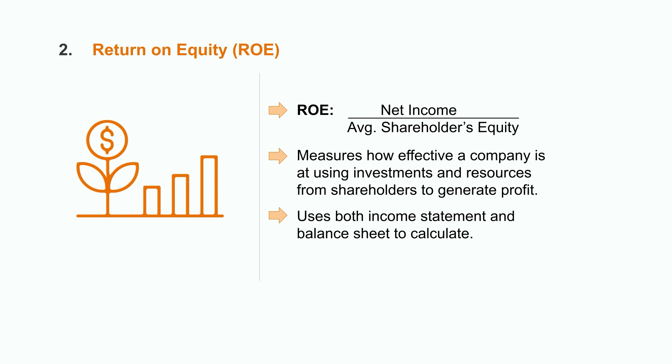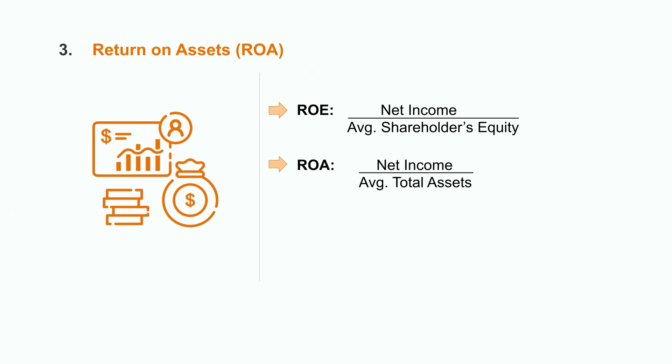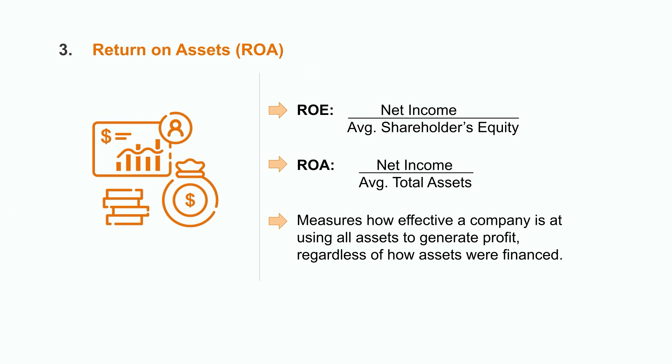This is critical for an investor to understand. Let's look at one more ratio called return on assets. This ratio is similar to return on equity. However, instead of measuring the profit generated based solely on investment, the return on assets ratio measures the company's ability to use all of their assets to generate profit, regardless of how they were financed. The formula is calculated by taking the company's net income and dividing it by their average total assets. If a company's return on assets is 10%, this means that for every dollar of assets they own, they're generating 10 cents of profit. Ultimately, this tells us how efficiently a company is using the assets in the organization to generate income.